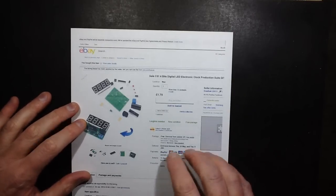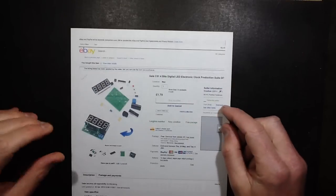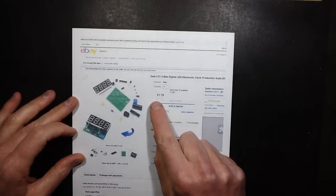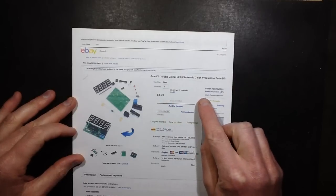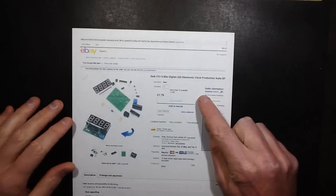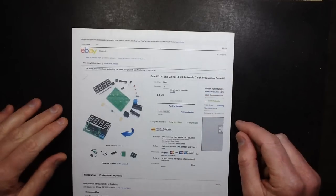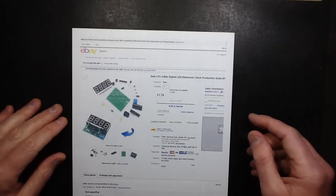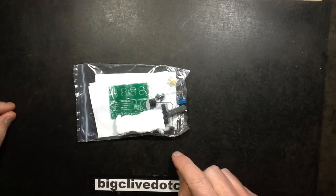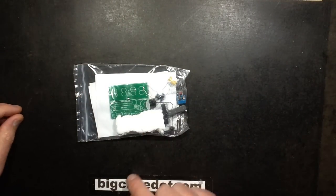I've just received a kit through that I bought on eBay. It's a kit for a digital clock, just a small one. It comes with all the components, the circuit board, and it cost £1.79. It came from China. First impressions are a loose microcontroller in a polythene bag next to a bit of polystyrene.